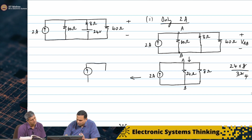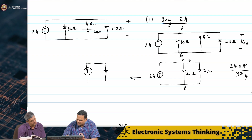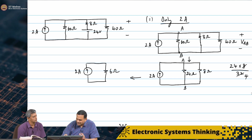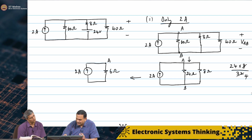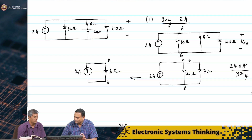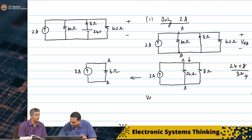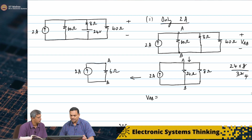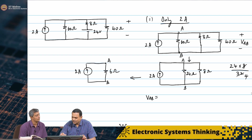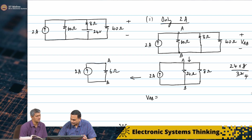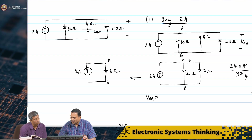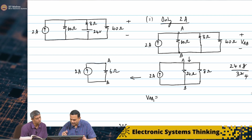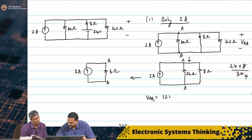So, 2 amperes flowing through 6 ohms — we have maintained nodes A and B, and we have not lost those nodes. The voltage VAB1 is basically 2 times 6, which is 12 volts.